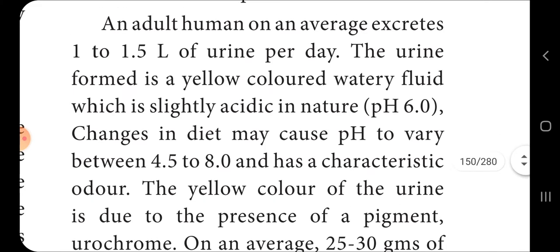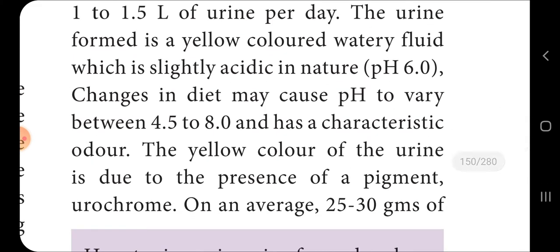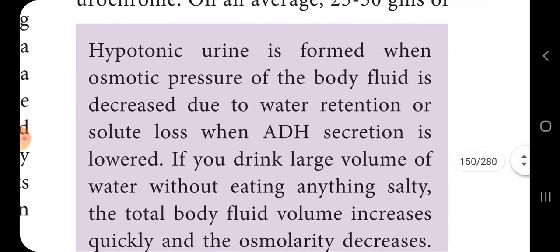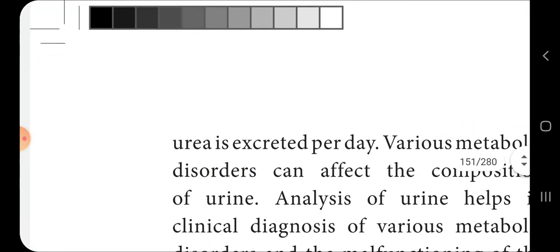In adult humans, an average of 1 to 1.5 liters of urine is excreted per day. The urine formed is yellow in color and slightly acidic in nature, with a pH range of around 6.0. Changes in diet may cause the pH to vary between 4.5 to 8.0, and urine has a characteristic odor. The yellow color of urine is due to a pigment known as urochrome. An average of 25 to 30 grams of urea is also present in the urine.